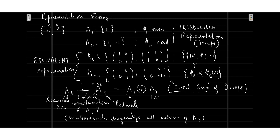In the first case, we said that phi 1 is even, and the representation was such that both elements E and P got mapped to only one element, which is one. If we consider only an odd function, we find that E maps to one and P maps to minus one. Both A1 and A2 consist of purely simple numbers, which is what we call the one-cross-one representation.